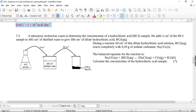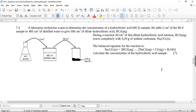Now, a laboratory technician wants to determine the concentration of a hydrochloric acid sample. He adds 5 cubic centimeters of the hydrochloric sample to 495 cubic centimeters of distilled water to give 500 cubic centimeters of dilute hydrochloric acid. Then he takes during a reaction 50 cubic centimeters of this dilute hydrochloric acid solution.